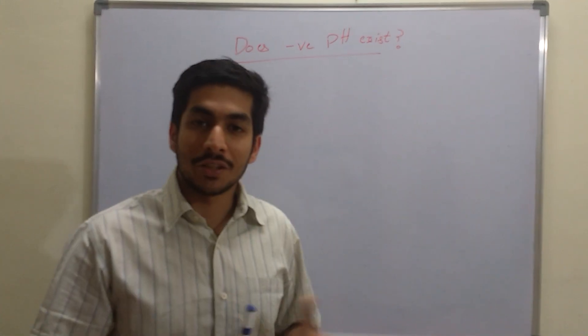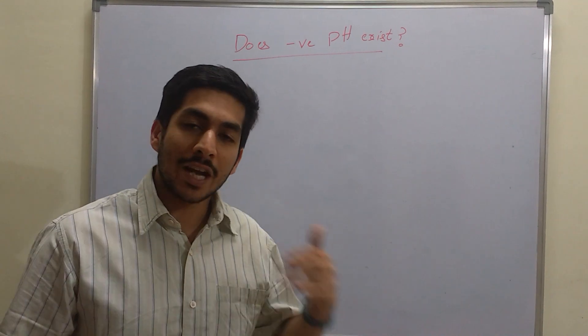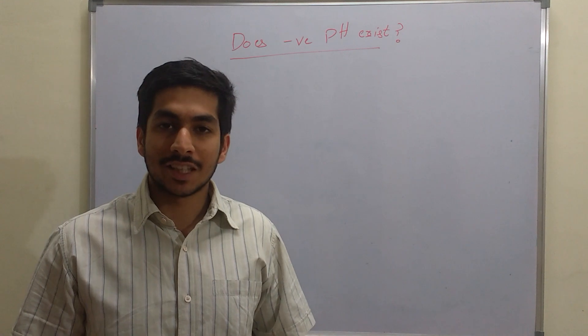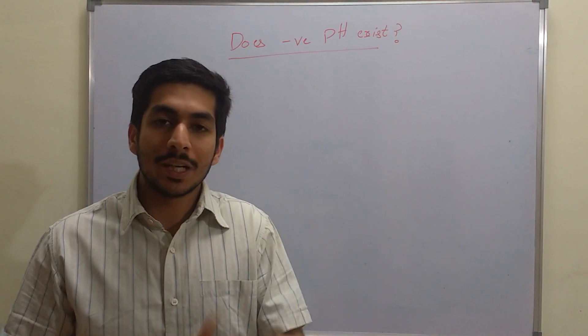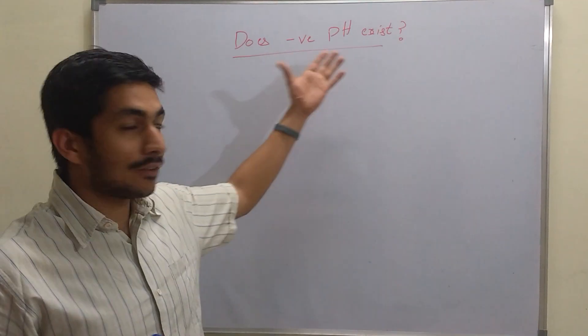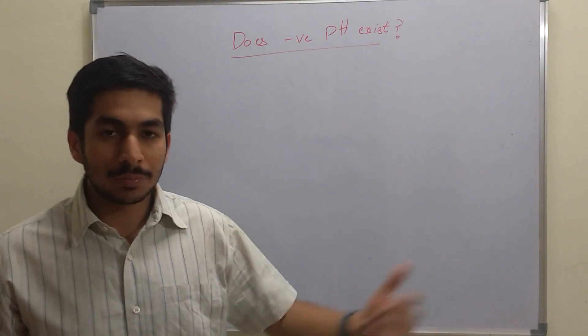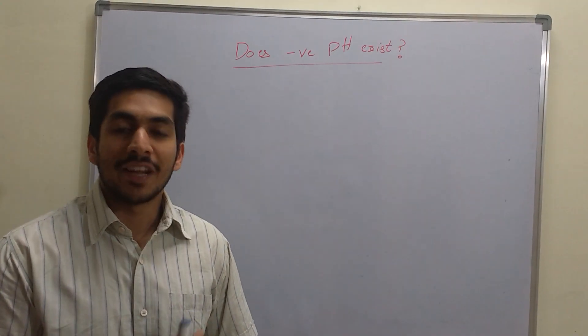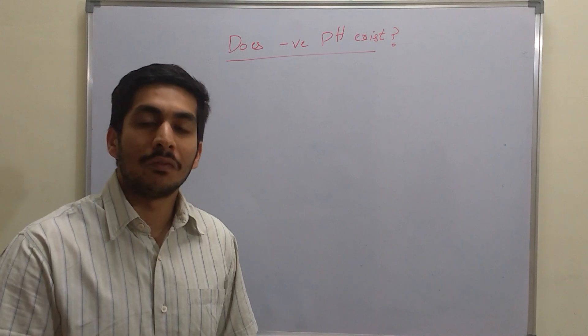Negative pH - this seems very odd because right from childhood we have been told that pH ranges from 0 to 14. Many standard textbooks, like NCERT in India, show that pH ranges from 0 to 14. So how come I'm talking about negative pH? Does it exist? Theoretically speaking, yes it is possible. A negative pH can exist, and practically speaking it is very common.